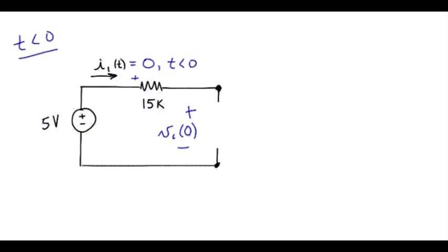Zero current there means zero voltage drop across the 15k resistor, so the 5 volt value appears there. So VC of zero is 5 volts. That's what we need to move this circuit into the S domain.